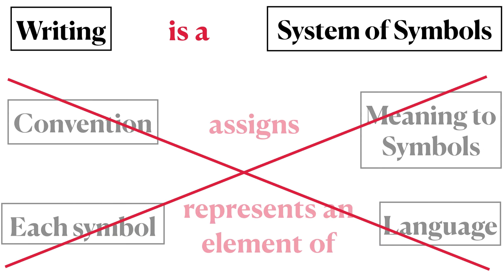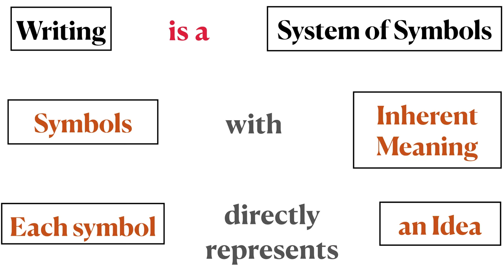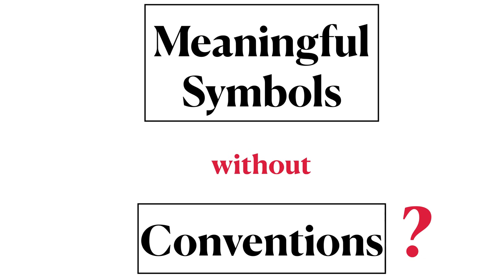But these are alien symbols, so what would the process look like if these last two statements didn't apply to Asgardian symbols? In other words, what if convention did not assign meaning to symbols? What if each symbol did not represent an element of language? What if instead we ask: could there be a writing system where the meaning of the symbols is inherent, rather than derived through convention, where each symbol represents an idea directly, rather than an element of language? Could there be meaningful symbols in the absence of conventions to assign meaning?